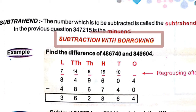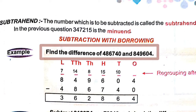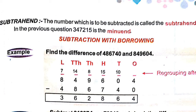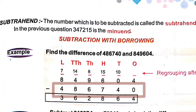Then, subtraction with borrowing. When the digit of the Minuend is small and the digit of the Subtrahend is large, we have to borrow from the next column. See the example: find the difference of 4,86,740 and 8,49,604. The larger number is 8,49,604, so we subtract 4,86,740 from 8,49,604. Here the Minuend is 8,49,604 and the Subtrahend is 4,86,740. Write the numbers according to place value.